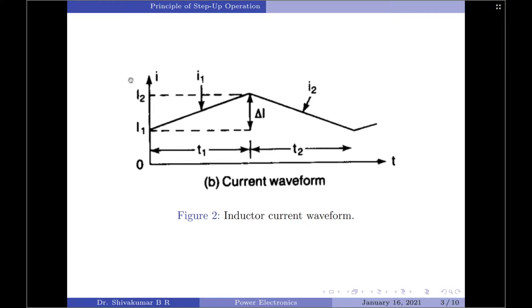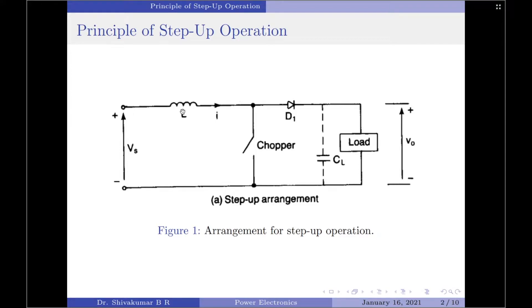If the switch is open for a time T2, the energy stored in the inductor is transferred to the load through diode D1, and the inductor releases the energy stored in the previous period. This also means that the back EMF induced at the inductor reverses its polarity, causing the voltage across the load to be the sum of the supply voltage VS and the back EMF induced in the previous period.